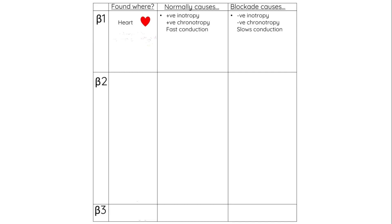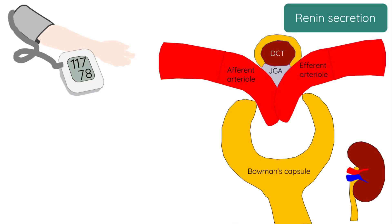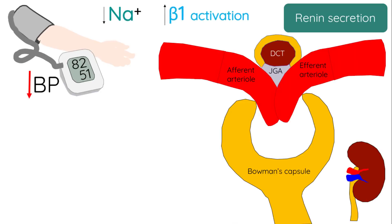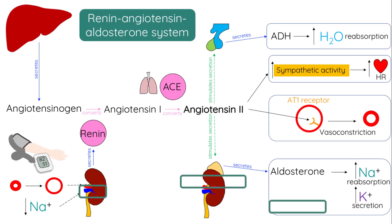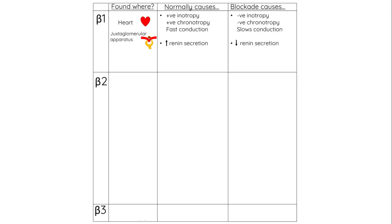Beta-1 receptors are also found in the juxtaglomerular apparatus in the kidney. When blood volume is lost, this causes blood pressure to drop and total circulating sodium drops, causing an increase in sympathetic activation. These three factors — a drop in blood pressure, a drop in sodium, or an increase in sympathetic activation — induce the release of renin from the kidneys. The release of renin causes an increase in arterial blood pressure via the renin-angiotensin-aldosterone system. Beta-1 blockade therefore also reduces blood pressure by reducing renin secretion, which is why beta-blockers may work in treating hypertension.